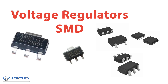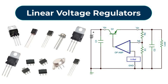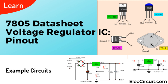The control element in a voltage regulator IC is the component responsible for regulating the flow of current through the circuit in order to adjust the output voltage to match the desired reference voltage. It acts as the valve that controls how much voltage and current are allowed to pass through to the output. The most common type of control element used in voltage regulator ICs is a transistor, typically a MOSFET (Metal Oxide Semiconductor Field Effect Transistor) or a BJT (Bipolar Junction Transistor).